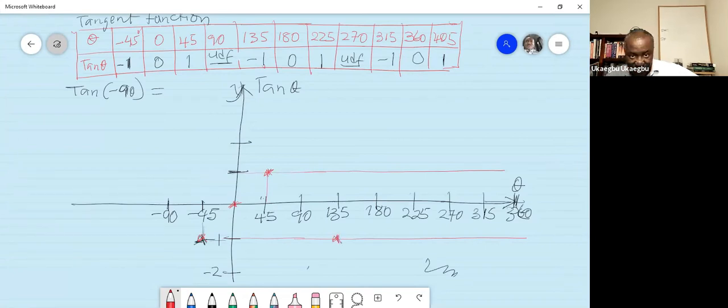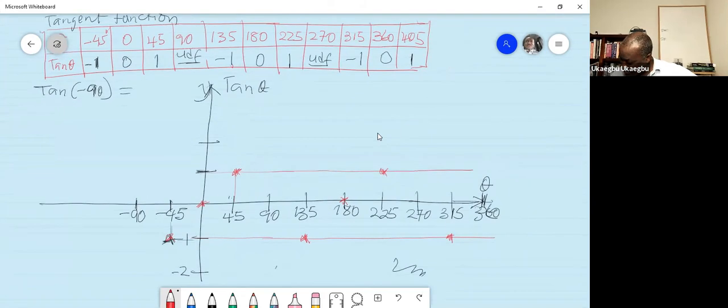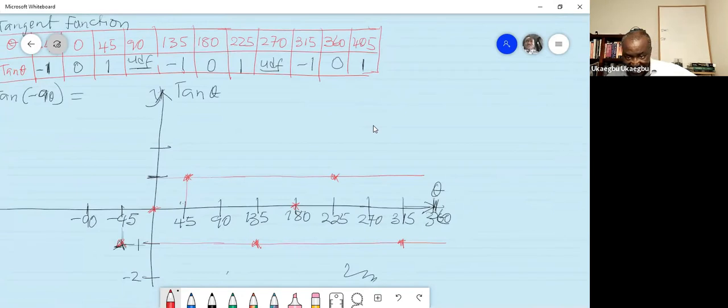Now at 90, it's undefined, so there's nothing to plot. 135 is negative 1, somewhere here. 180 is 0, somewhere here. 225 is 1, which is somewhere here. 270 is undefined - nothing to plot. 315 is negative 1, somewhere here. And 360 is 0, somewhere here. So what is 405? 405 is 1, somewhere here.